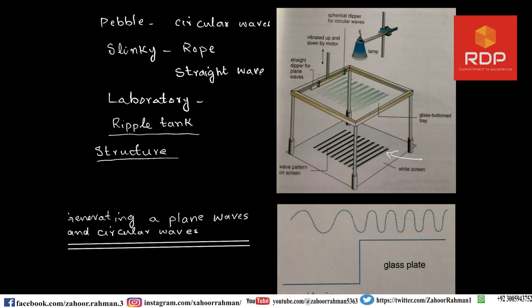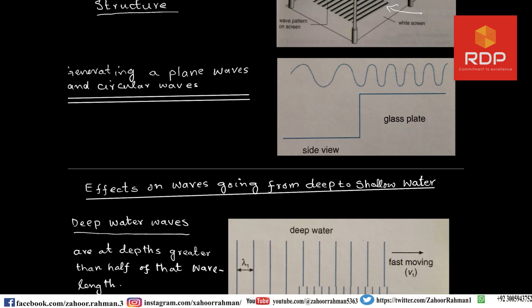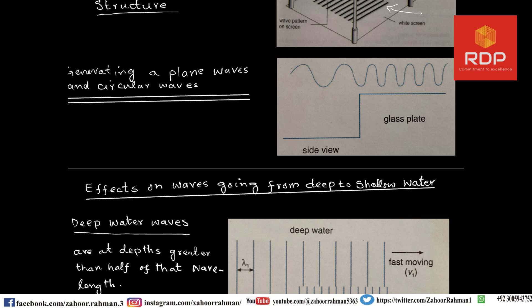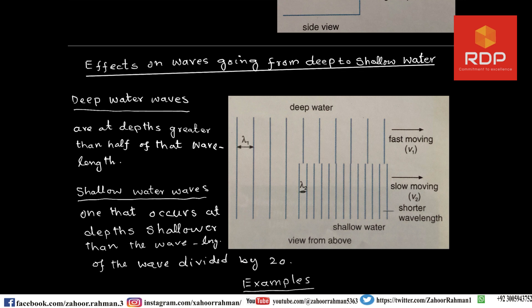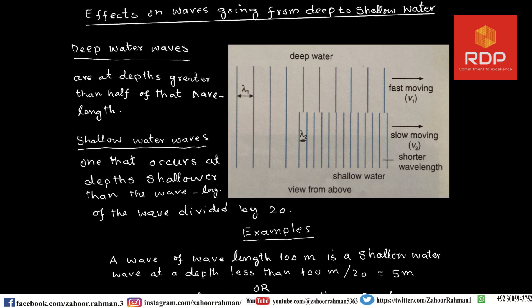Now we are not viewing these waves from the top — we are seeing them from the side of the ripple tank. You will observe that the waves produced are in this form. You can observe that the wavelength in the first two waves is greater and then it becomes shorter. We will discuss why in the subsequent topic. Keep in mind that this is the view from the side of the ripple tank.